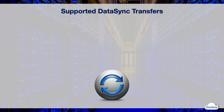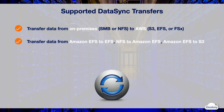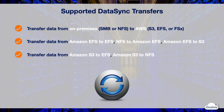DataSync supports the following types of data transfers. DataSync can transfer data from on-premises NFS storage or SMB storage to Amazon S3, EFS, or FSx for Windows File Server. DataSync can also transfer data from an in-cloud NFS file system to Amazon S3 or EFS, including transfer from Amazon EFS to EFS, self-managed NFS on AWS to Amazon EFS, and Amazon EFS to S3. DataSync also supports data transfers from Amazon S3 to EFS, and Amazon S3 to self-managed NFS.